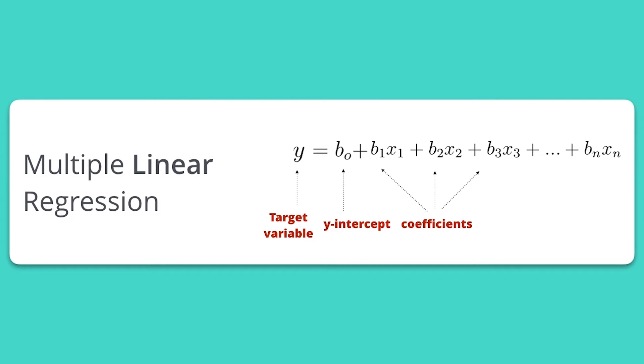Beta 1, beta 2, beta 3, all the way to beta n represent the coefficients for the different variables x1, x2, x3, all the way to xn.